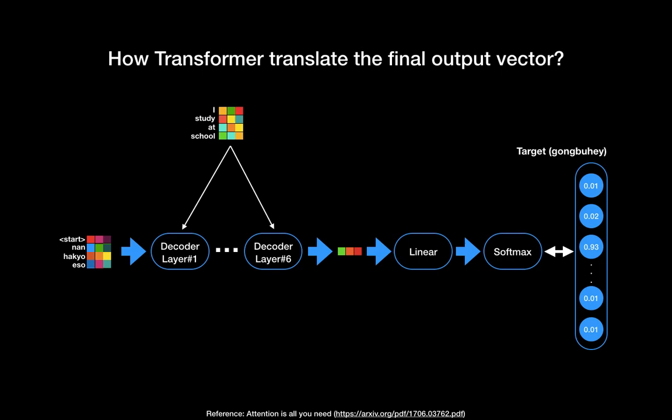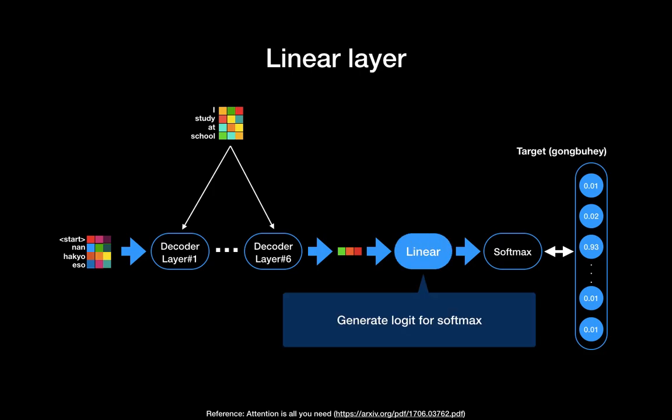How do we convert the final decoder vector into a word? In order to do that, we have a linear layer and softmax layer. The linear layer is to generate logits for softmax, and the softmax gives probability to all vocabularies.